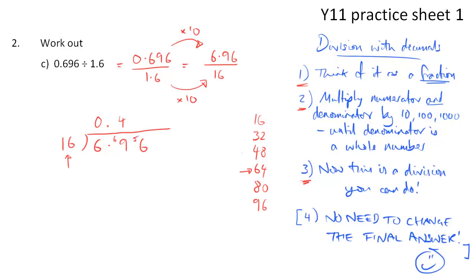16s into 56, I can see it goes in 3 times. And the remainder, 48 from 56, is 8. And we need to put a 0 there to make sure we've got somewhere to put our remainder. And finally, 16s into 80 goes exactly 5 times. So we've done it now. That's our answer, 0.435.